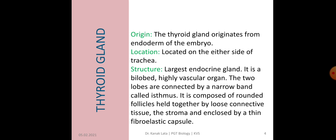The next endocrine gland is Thyroid Gland, which originates from endoderm of embryo and is located on either side of trachea. As far as the structure of Thyroid Gland is concerned, it is the largest gland. It is a bi-lobed, highly vascular organ. The two lobes of Thyroid Gland are connected by a narrow band called isthmus.